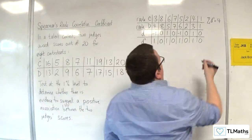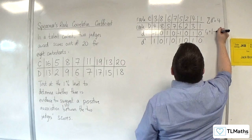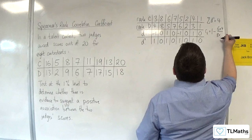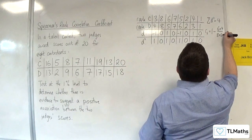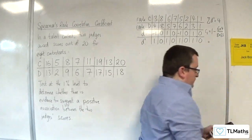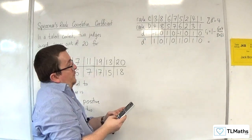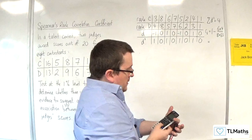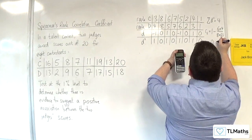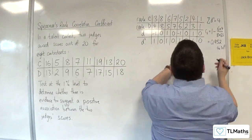So that means the Spearman's rank correlation coefficient is going to be 1 take away 6 lots of 4 over 8 times by 8 squared take away 1, so 63. That gives us 1 minus 6 times 4 over 8 times 63, and I'm getting 0.952 to 3 significant figures.